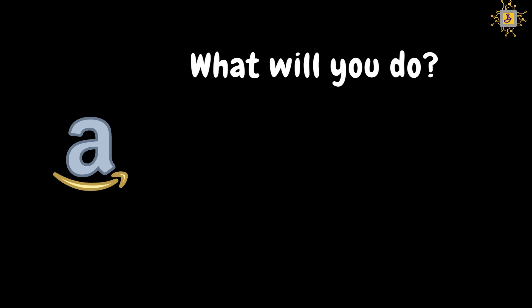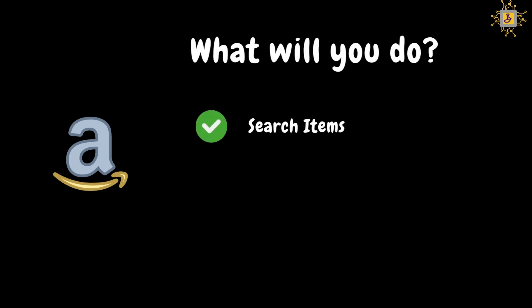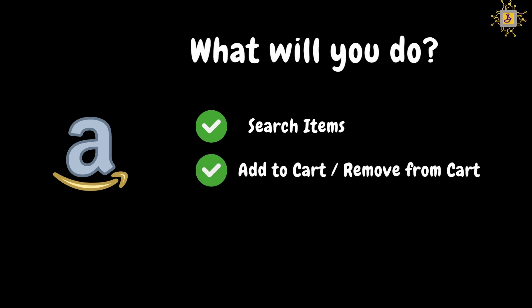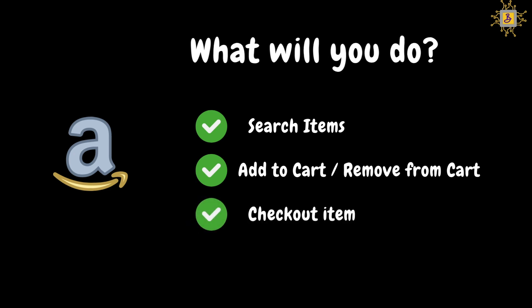To understand functionality, let's consider an e-commerce application. Every day you might use Amazon or Flipkart or similar e-commerce applications to buy items online. When using Amazon, the things you typically do are: search for the best quality item, check different options including price and cost, add an item to the cart, remove from the cart, and check out. So, the functionality of the Amazon application includes: search, add to cart, remove from cart, and checkout.